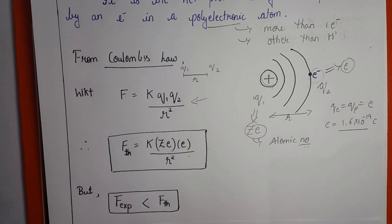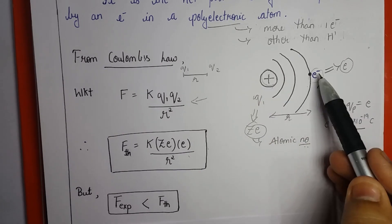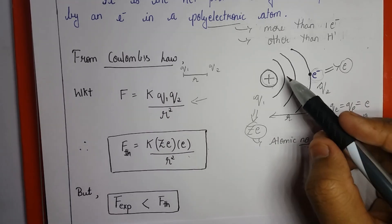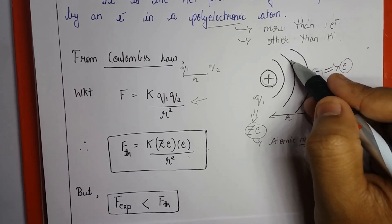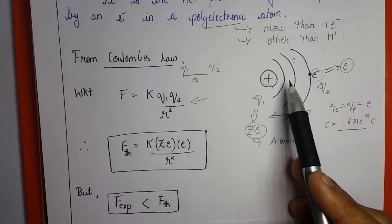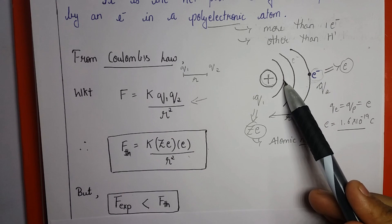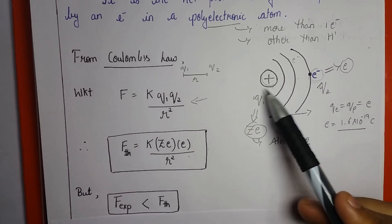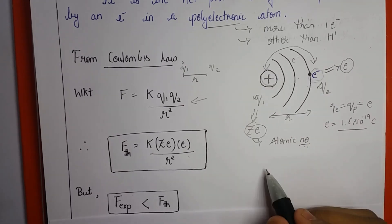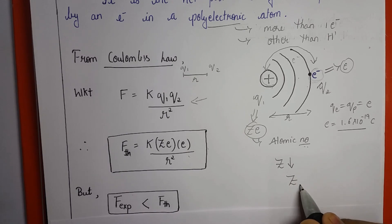The actual or experimental force of attraction is always less than the theoretical value. This is because theoretically we considered only the positive charge nucleus and the electron, but experimentally the inner orbital electrons play a major role in shielding the attractive force between the nucleus and the outer electron. This shielding or blocking of the nuclear force leads to a decrease in nuclear charge.